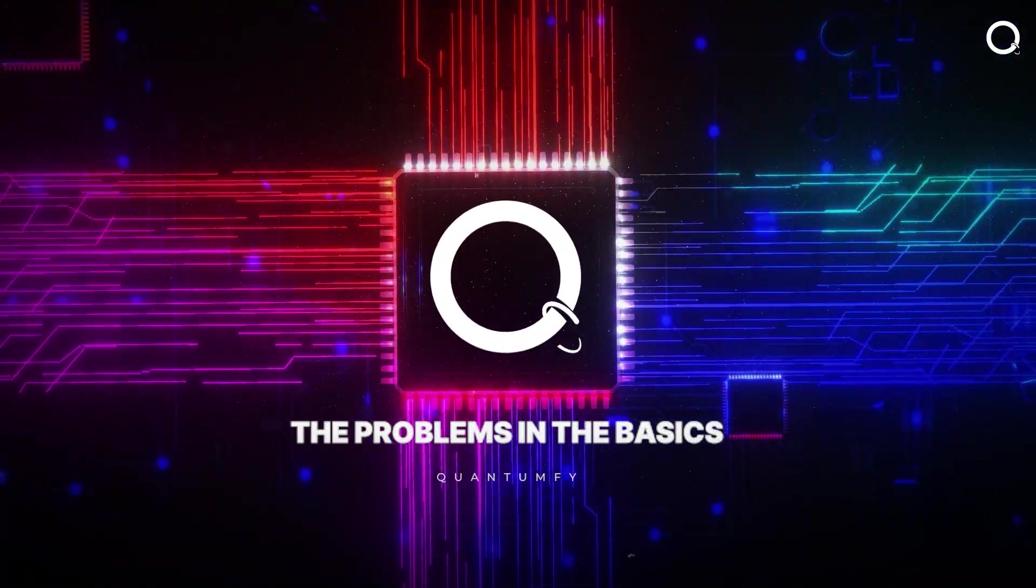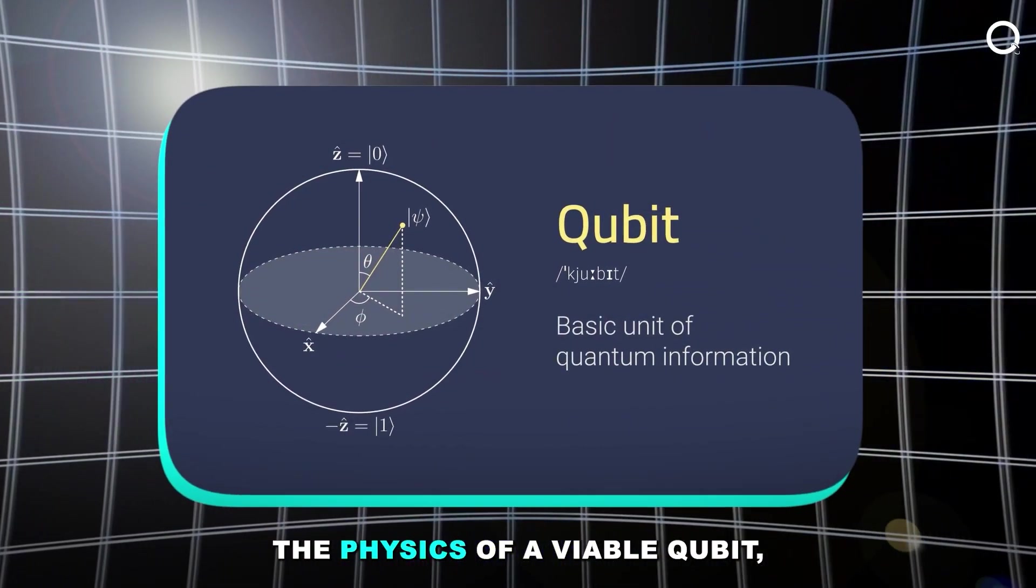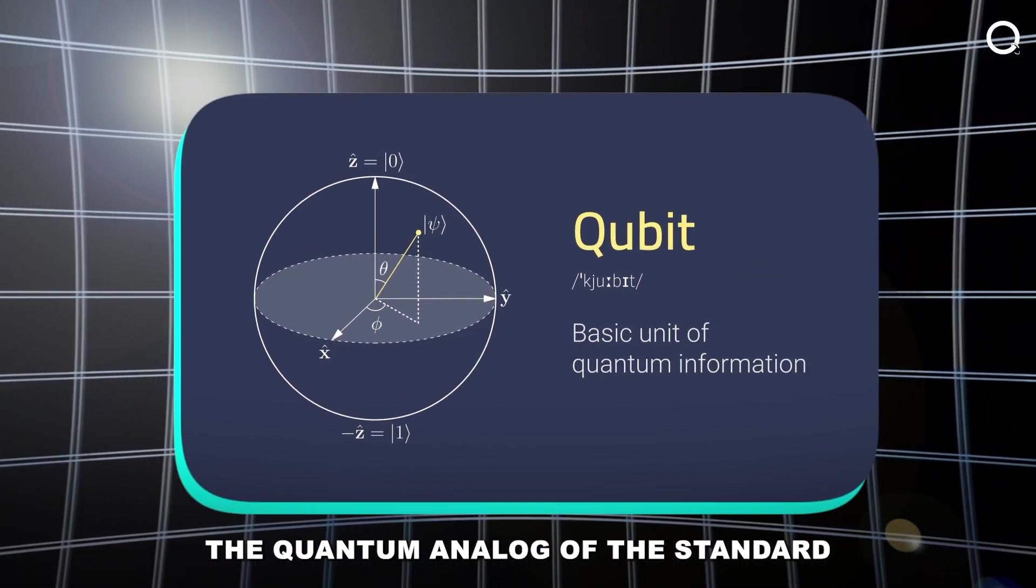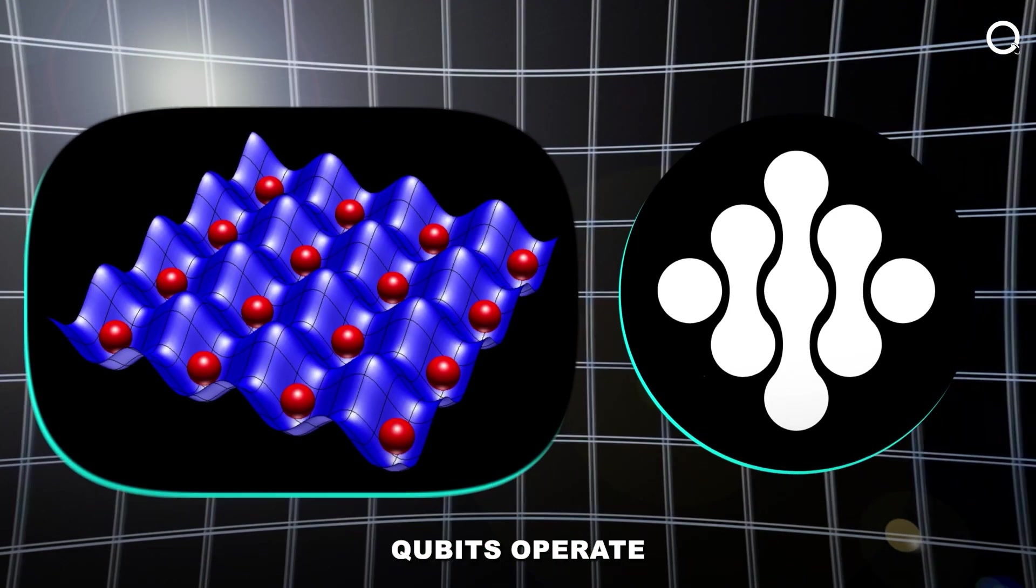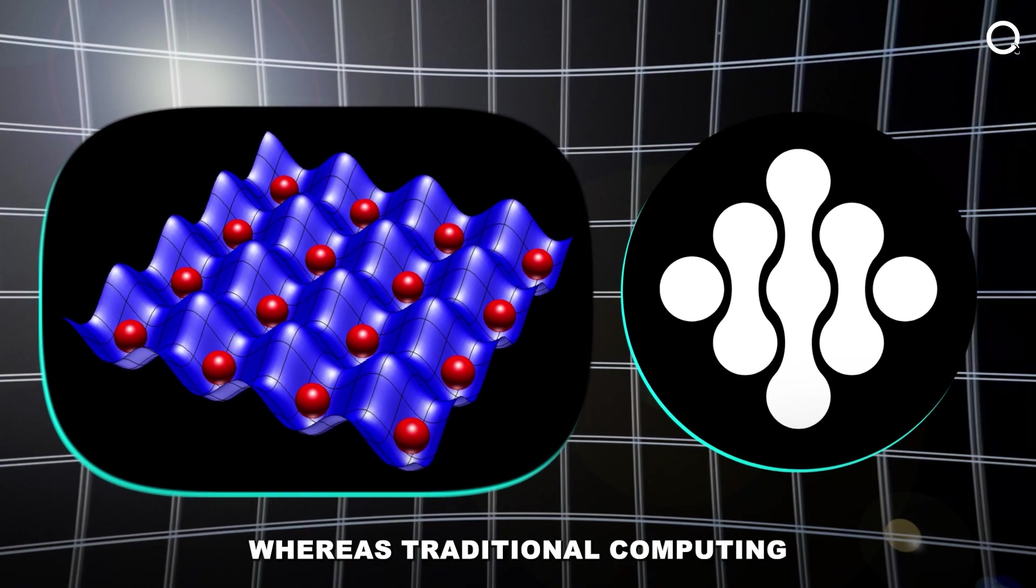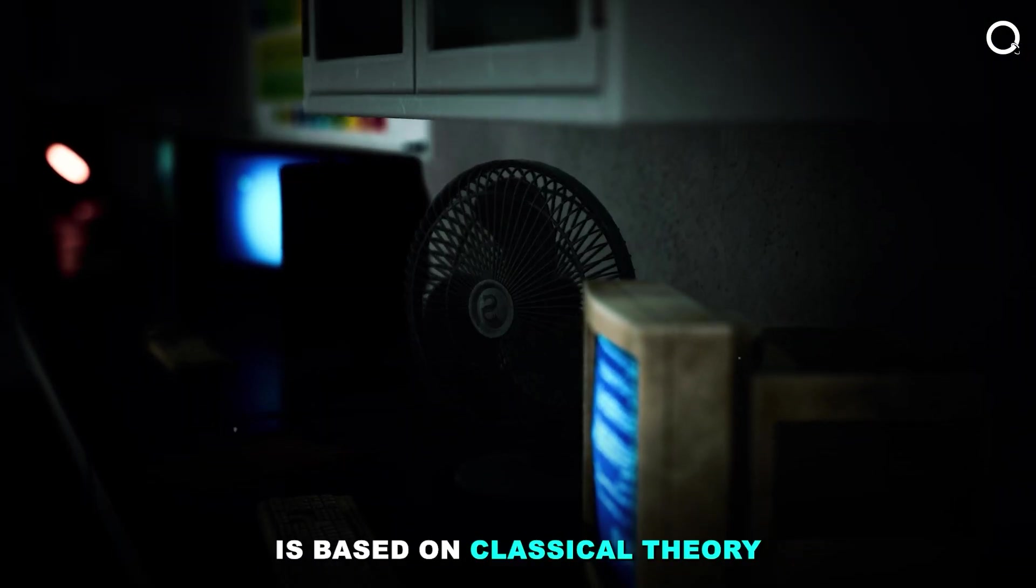The problems in the basics. The physics of a viable qubit, the quantum analog of the standard binary bit, is crucial to quantum computing. Qubits operate in the field of quantum physics, whereas traditional computing is based on classical theory.